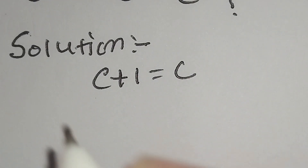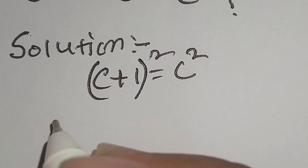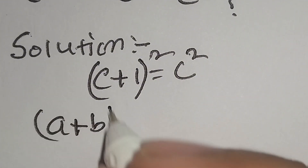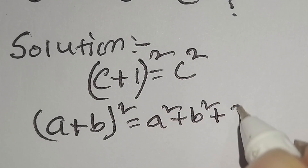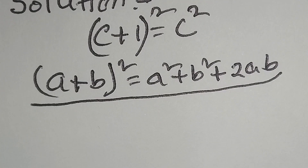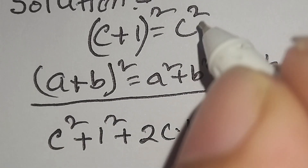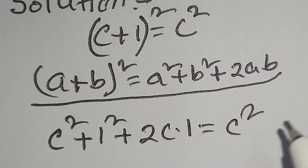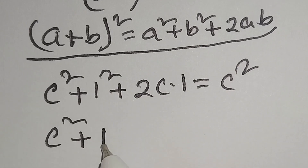Now we will square both sides, so we can write here: c plus one whole square equals c. We know that a plus b whole square is equal to a squared plus b squared plus two a b. According to this identity, we can write c plus one whole square as c squared plus one squared plus two c times one, which equals c squared. So c squared plus one plus two c equals c squared.